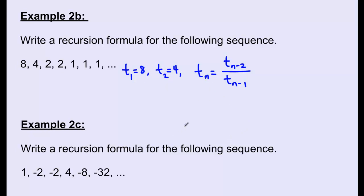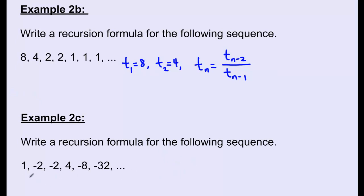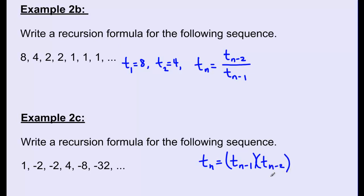For example 2c, the sequence is 1, negative 2, negative 2, 4, negative 8, negative 32. The pattern is that any given term equals the term directly before it multiplied by the term two terms before it. So the general term is Tn equals Tn minus 1 times Tn minus 2. We define the first two terms: T1 equals 1 and T2 equals negative 2.